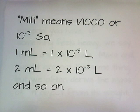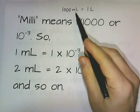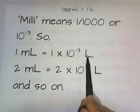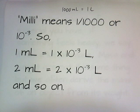If a thousand milliliters equals one liter, it makes sense that one milliliter is one one-thousandth of a liter. The prefix milli means one one-thousandth, or ten to the negative third. So one milliliter is one times ten to the negative three liters. Two milliliters is two times ten to the negative three, and so on. That's how you convert milliliters into liters — you just slap on times ten to the negative third.